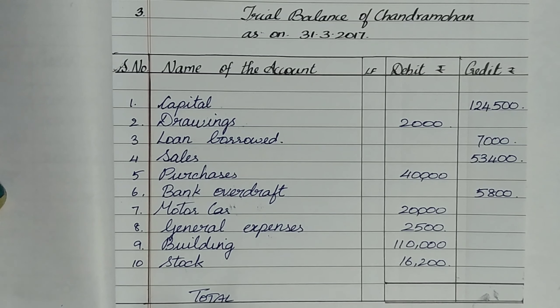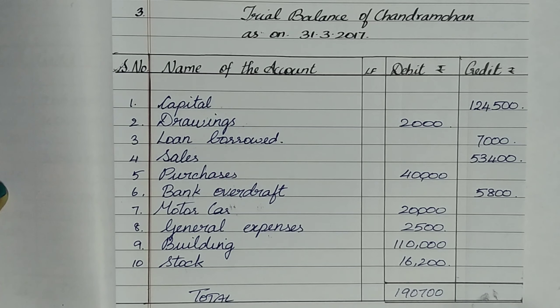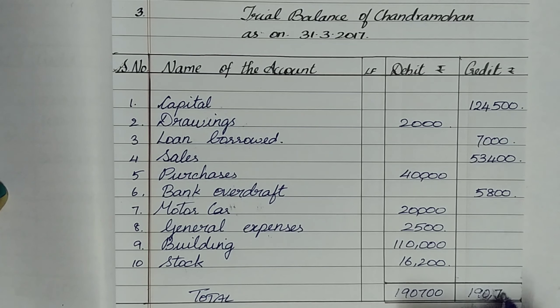The total of the debit column is 1,90,700 and the credit column is also 1,90,700. Both columns match, so the trial balance is complete and correct.